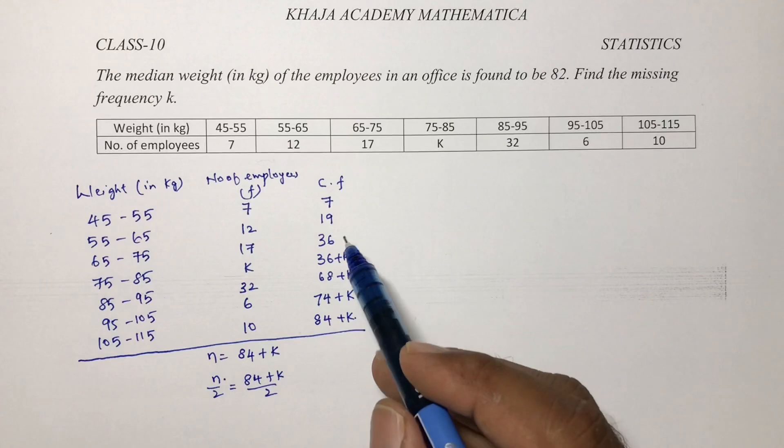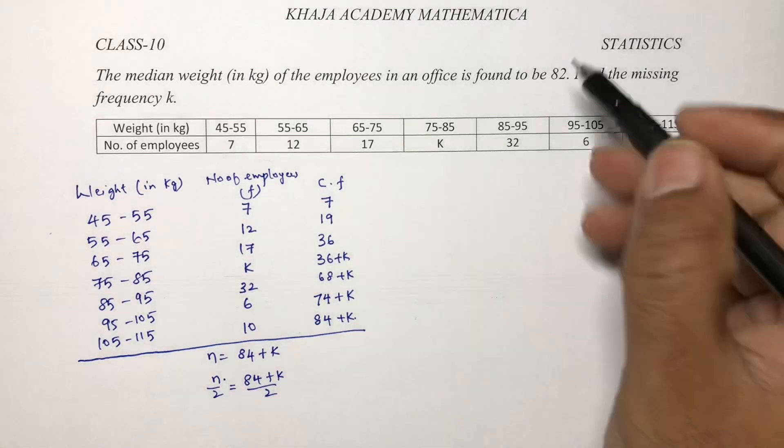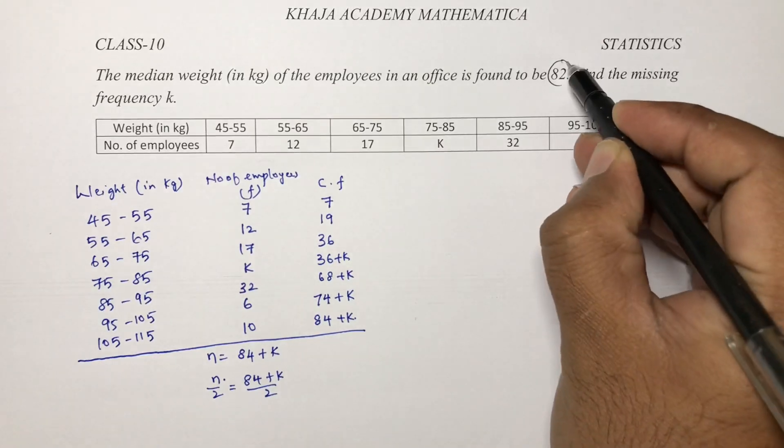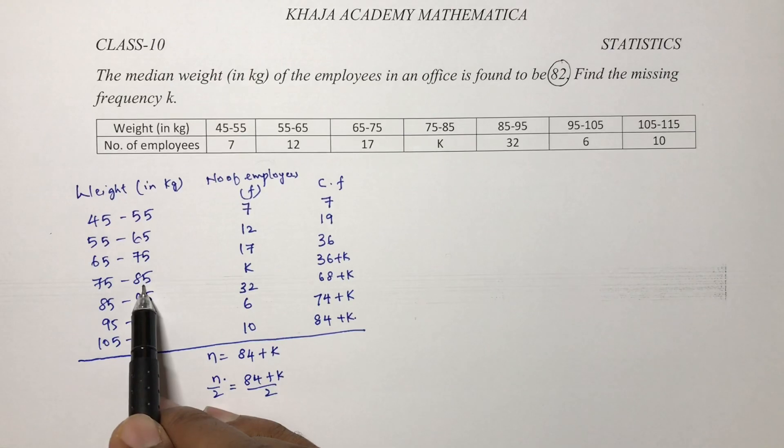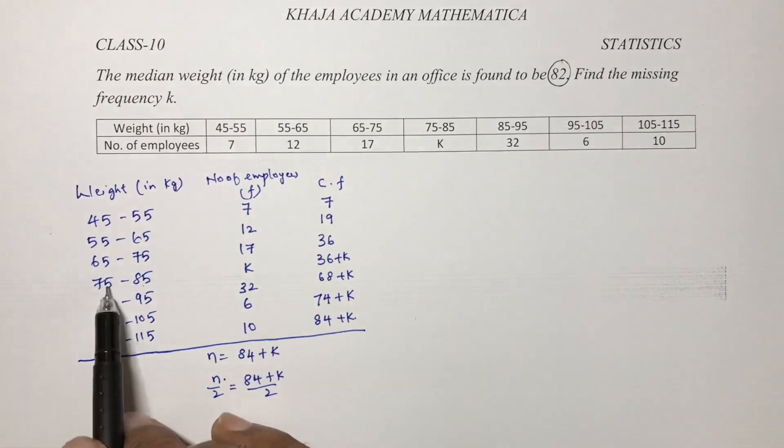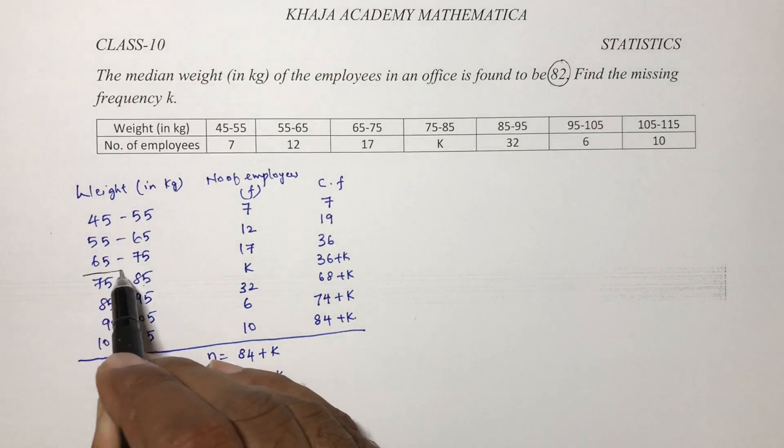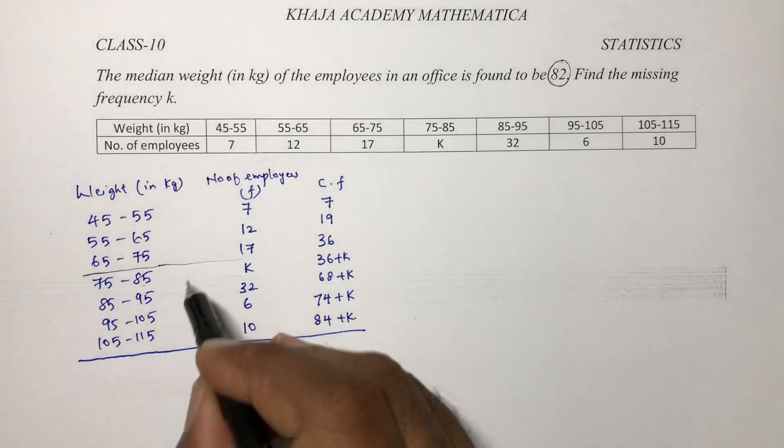Okay, but for missing frequency we need to see the solution. The median is 82, and 82 will come between 75 and 85. For missing frequency of a median, by seeing the answer the answer is 82 and it lies between 75 and 85.